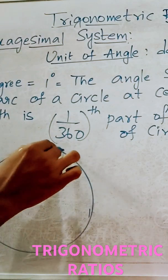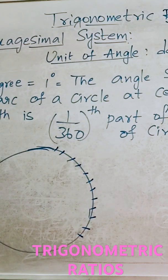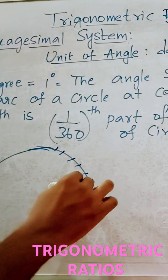Divide this circumference into 360 equal parts. Divide this circumference into 360 equal parts. Like this, divide it into 360 equal parts and consider one such part.